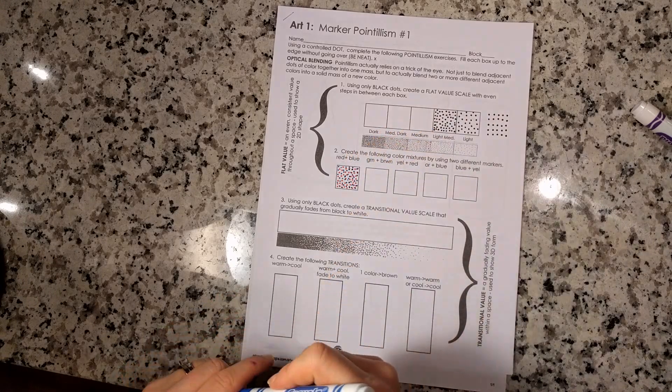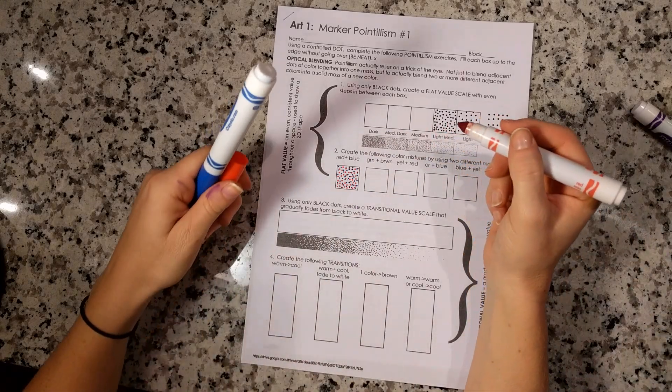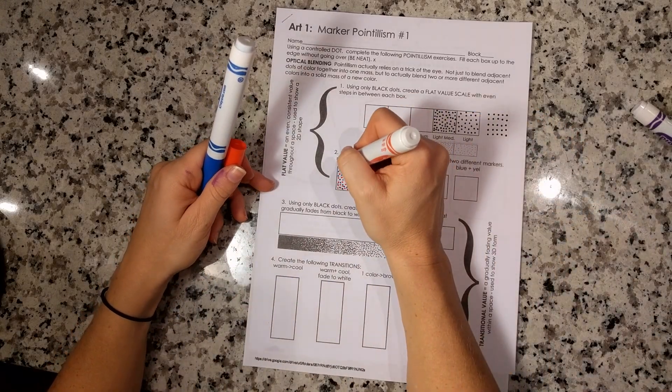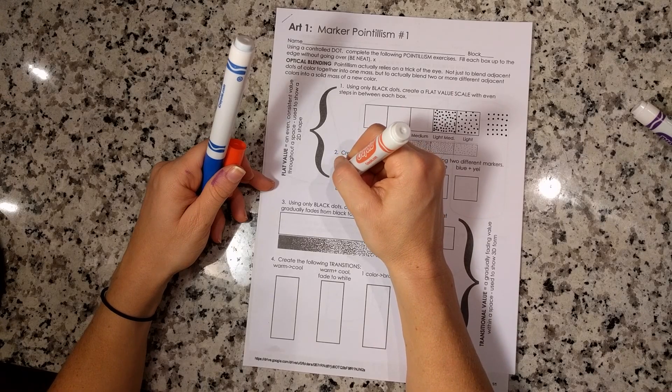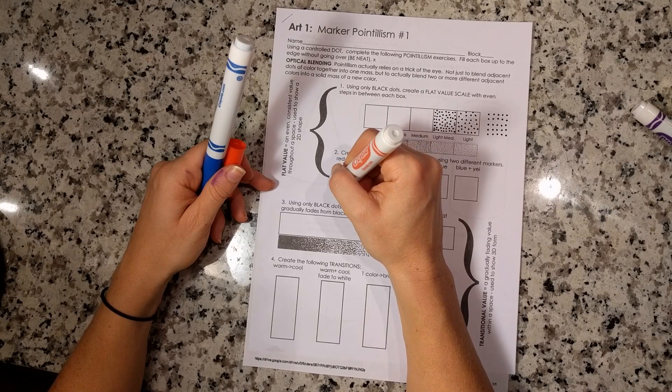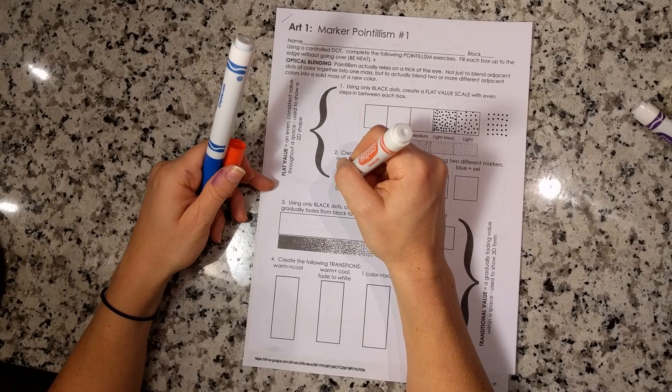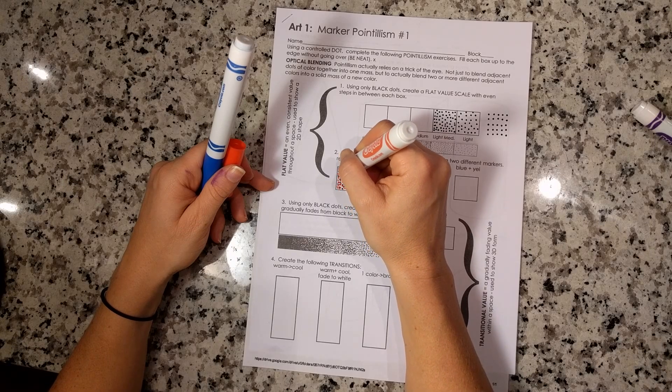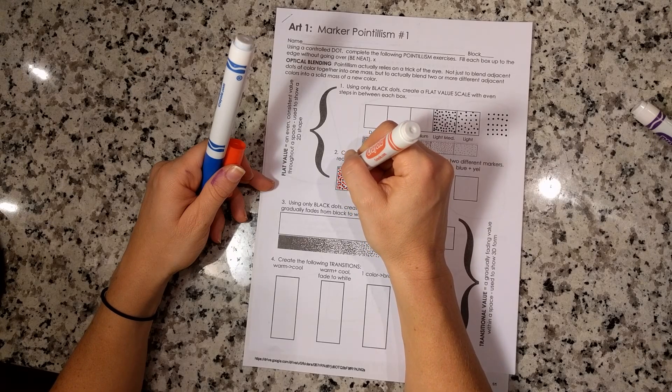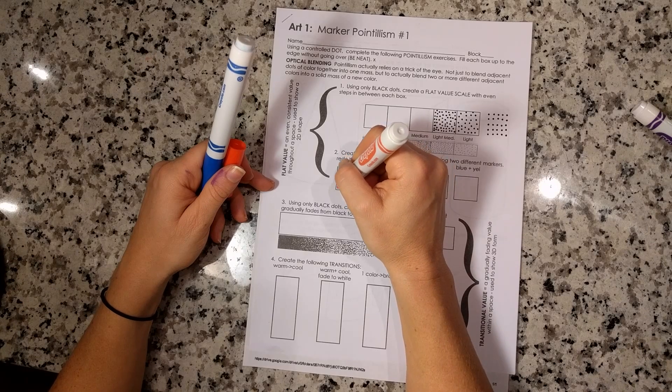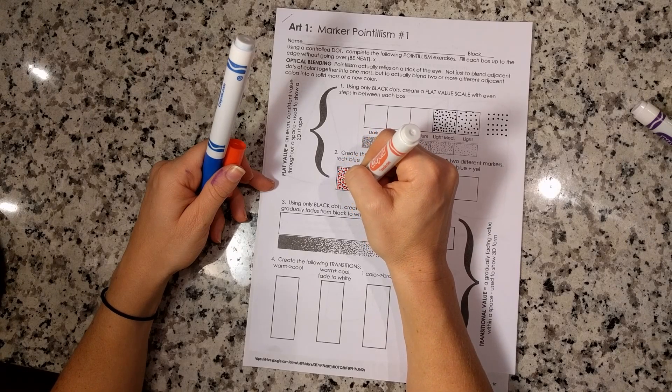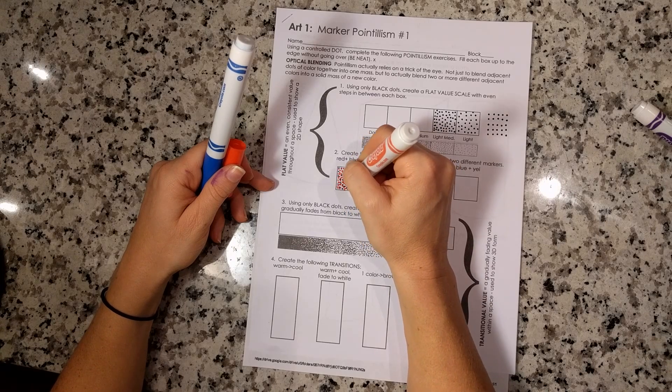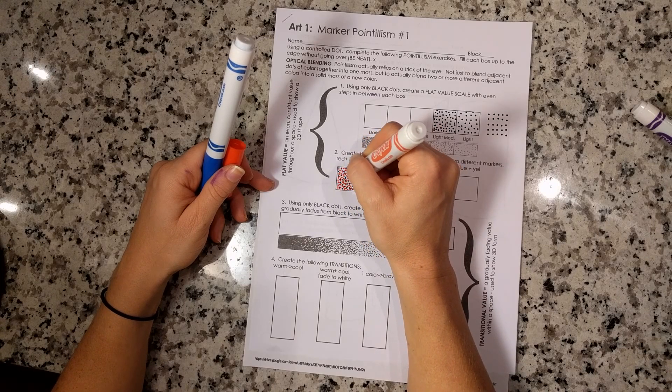I do want to get all the way up to the edge. I like to hold both markers in one hand so I can go back and forth. Now I'm getting those red dots a little bit closer together. It's a controlled dot, and I'm thinking about where I'm placing it. It is a random pattern, but I am being very mindful about how close or far apart those dots are.